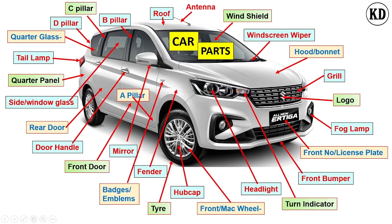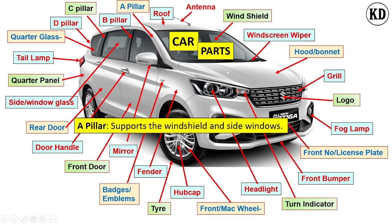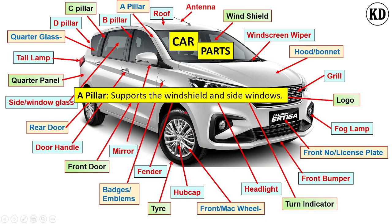The next component is the A pillar. The function of the A pillar is to support the windshield as well as the side window and the roof. This completes the list of exterior components.